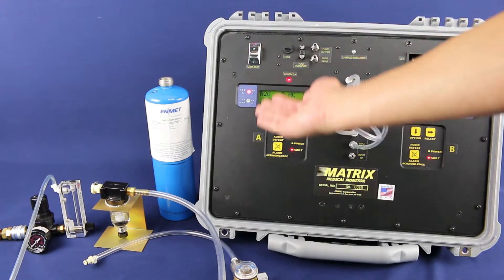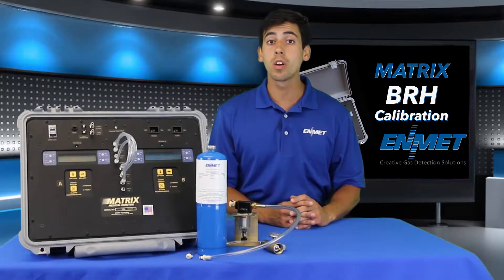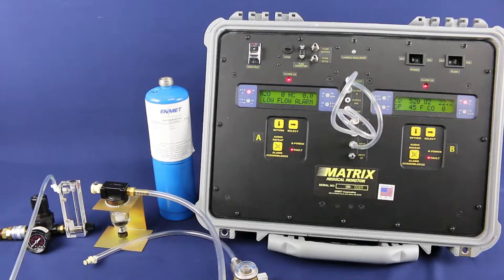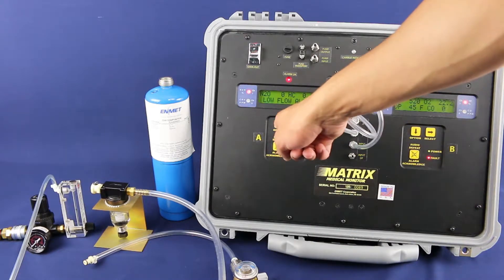Here we have a properly set up matrix unit that we are going to use to calibrate the BRH sensor. The BRH channel is located on side A channel 4.